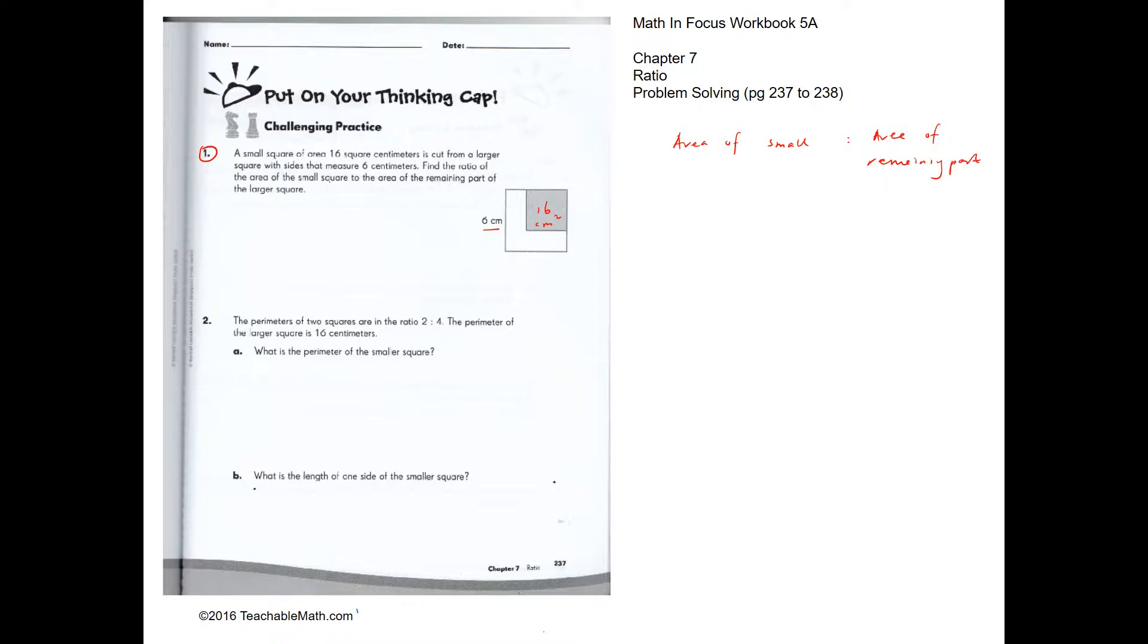Over here, we know that the area of the small square is 16 square centimeters. However, we do not know the area of the remaining part, which is the unshaded portion. So how do we find the area of the remaining part?